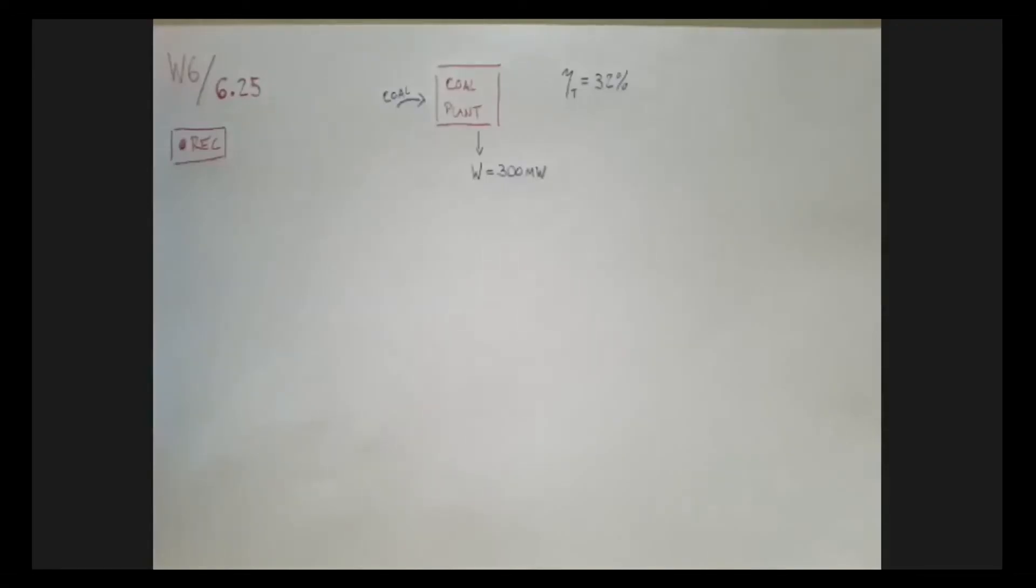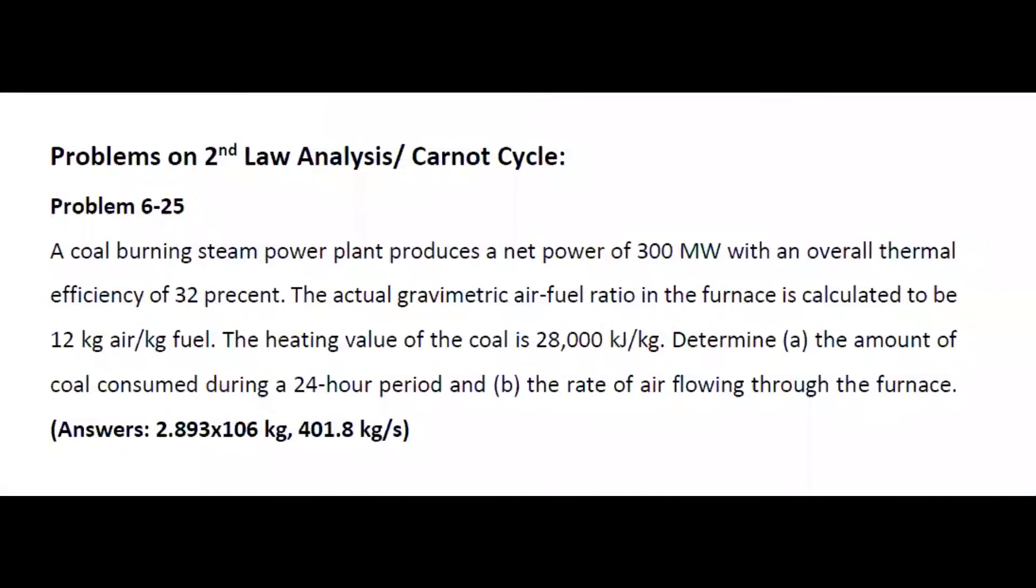Okay, so let's have a look. We have a coal burning steam power plant that produces a net power of 300 MW with an overall thermal efficiency of 32%. The actual gravimetric air-fuel ratio in the furnace is calculated to be 12 kg of air for every kg of fuel, in this case coal, so 12 kg of air for every kg of coal.